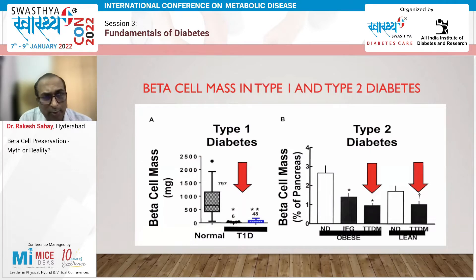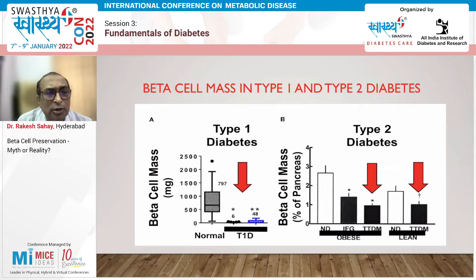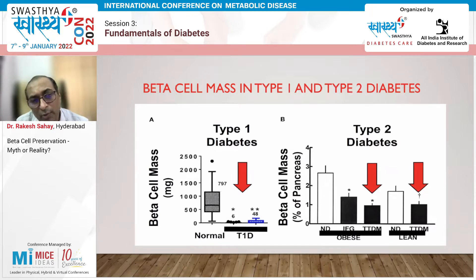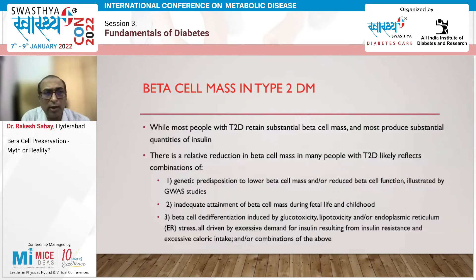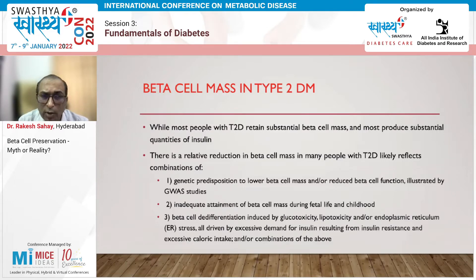This picture depicts how beta cell mass in type 1 and type 2 diabetes differ. In type 1 diabetes, there is hardly any beta cell mass left, whereas in type 2 diabetes, a significant amount is preserved — though still less than in non-diabetic individuals. The loss in type 1 diabetics may be due to genetic predisposition to reduced beta cell mass.